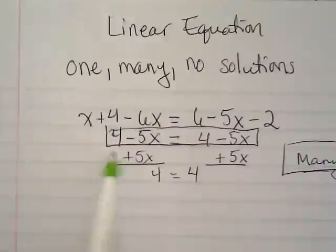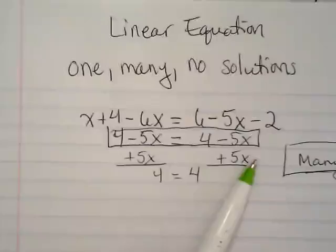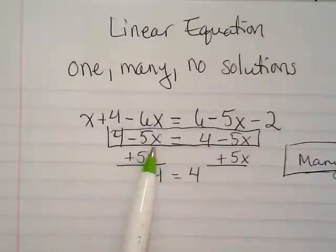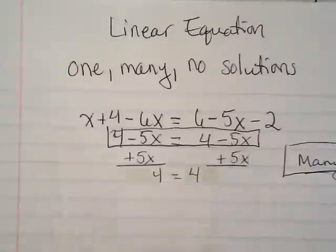Because if 4 minus 5x is equal to 4 minus 5x, if I put a 2 in there, it would also be a 2 over here, and it would do the exact same thing.